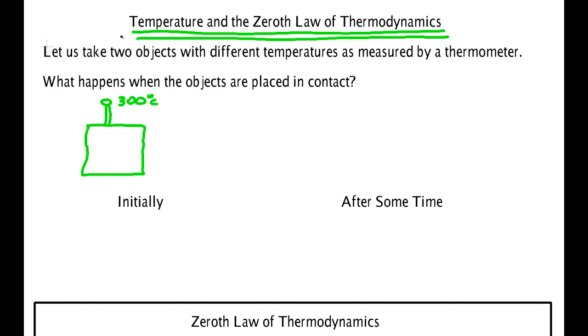And we attach that, say by contact, with some other object, say over here. And that object has its own thermometer. And that thermometer when you read it, let's say, says that it's 100 degrees Celsius. So originally they were separate. One was 300, one was 100. And we put them together. And the question is what will happen?